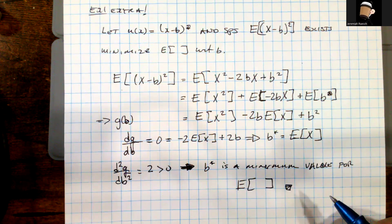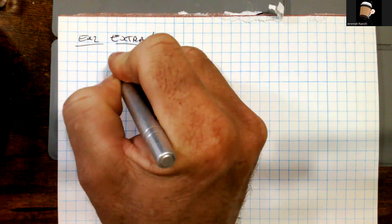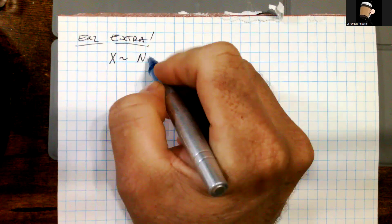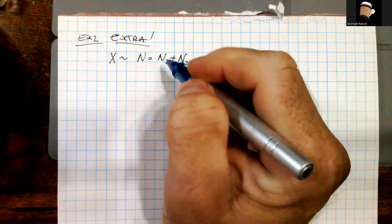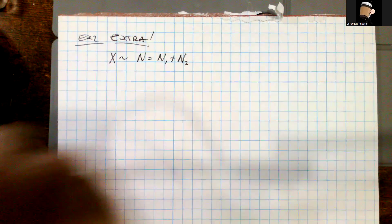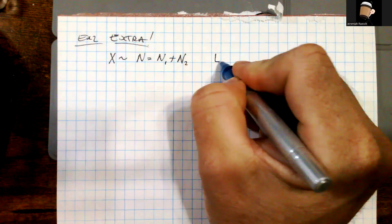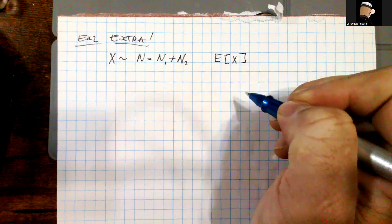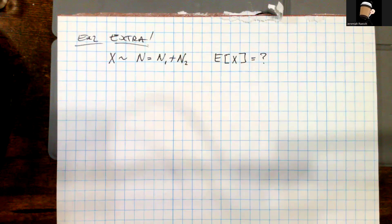I hope that was helpful. In Example 2, we're going to look at X distributed as a hypergeometric, where n1 is the number of successes or chips of one type, and n2 is the other. We want to compute the expected value of X.